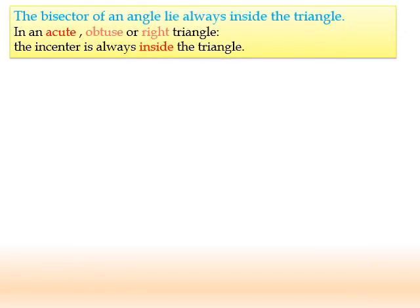Okay, now, let's see. The bisector of an angle lies always inside the triangle in an acute, obtuse, or right. The in-center is always inside the circle. Okay, it's the same as the center of gravity or centroid. It's always inside the triangle. But, the orthocenter, the intersection of height, it's inside the triangle if the triangle is acute, while it's outside the triangle if the triangle is obtuse.